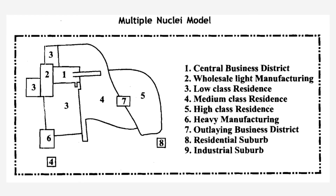This is the multiple nuclei model diagram. Just remember the rough diagram and note numbers 1 and 7. Number 1 is the central business unit. Similarly, there is a mini center called number 7, which is the outlying business district — so this is also a nuclei. Since it has multiple CBDs, this model is called the multiple nuclei model.